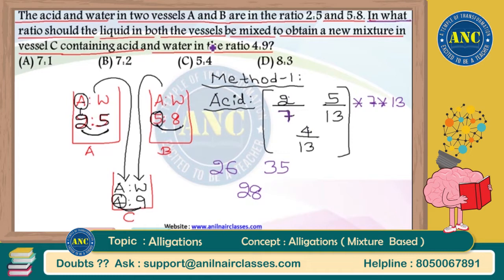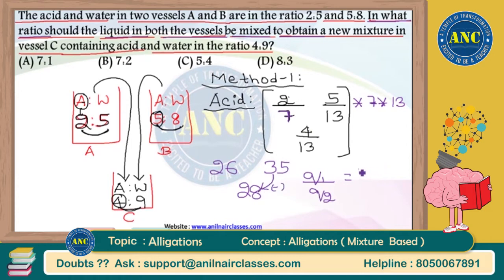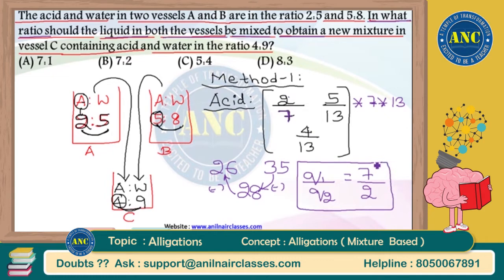The question asks in what ratio the liquids from vessels A and B should be mixed. Using the allegation formula, Q1/Q2 = (P2 − P) / (P − P1) = (35 − 28) / (28 − 26) = 7/2. So you should mix the liquids in the ratio 7:2, which is option B. This is the answer when working with acid as the base parameter.